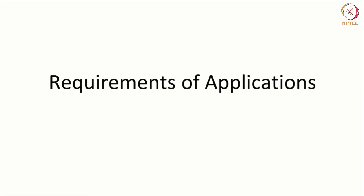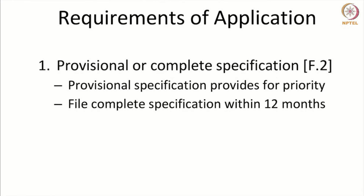We will look at the requirements of an application. First, the patent application has to be accompanied by a provisional or a complete specification. We had mentioned the difference between a provisional and a complete. If you follow the option of filing a provisional first, then within a period of 12 months you have to follow it up by filing a complete specification. The provisional specification will get you the priority, provided you follow it up by filing a complete specification within 12 months.